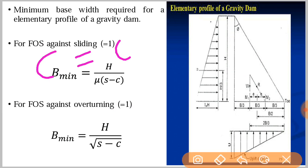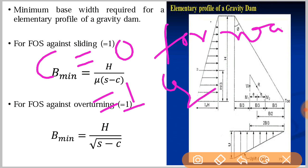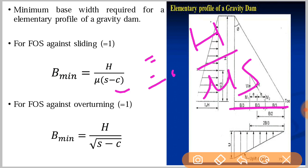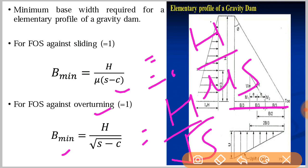The coefficient of uplift C equals zero for rock foundation and equals one for all other materials. So if the elementary profile of the gravity dam is placed on a rock foundation, then C equals zero. For minimum base width against sliding, the formula becomes H divided by mu times S. For safety against overturning, B minimum equals H divided by root S. When C is zero, just substitute zero into the respective formulas.